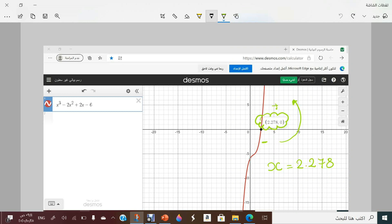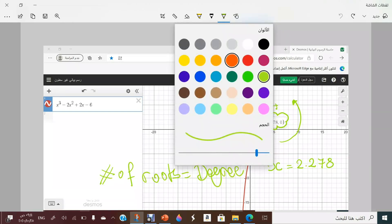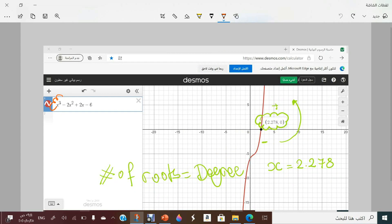So previously we were discussing that the number of roots will be the same as the highest degree. So now let's think of it. You have degree of 3 and you only got one root. We are still having two roots. Where are they?